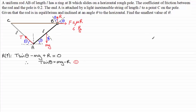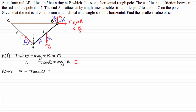Next, resolving horizontally with rightward positive: we have friction F acting to the right, and the horizontal component of tension T cos theta acting in the opposite direction. R and mg are both perpendicular so they don't contribute. Setting the resultant to zero gives F minus T cos theta = 0, therefore T cos theta = F — that's equation 2.